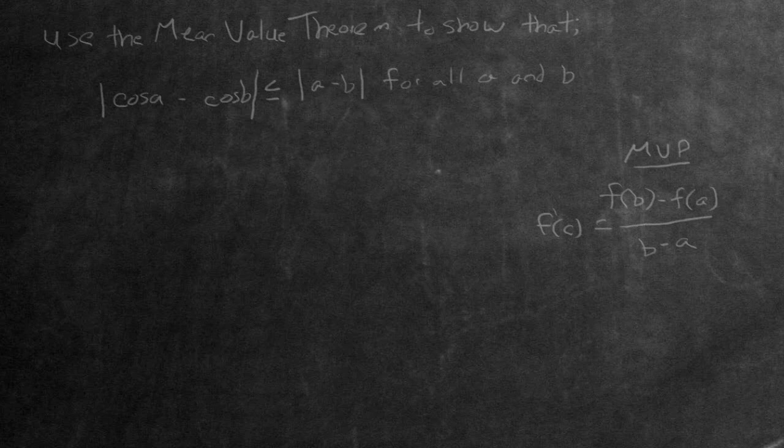Now in order to actually use the mean value theorem, what we're going to be doing is setting f of x equal to cosine x. Let's say f of x equals cosine x. And now focusing on this term right here, let's just write out cosine A subtract cosine B.